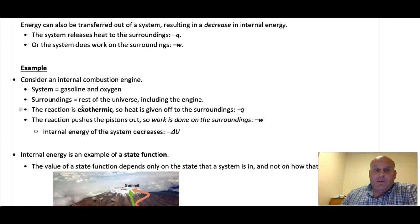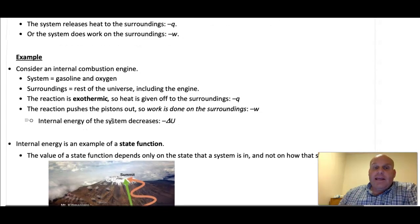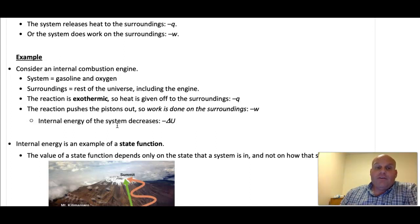So here's an example of what we're talking about here, a qualitative example, an internal combustion engine. So the system is gasoline and oxygen. The surroundings is the rest of the universe, including the engine. So this reaction that's happening is the system, this combustion reaction that's happening with the gasoline and the oxygen. So the reaction is exothermic, it's giving off heat to the surroundings, and the reaction pushes the piston, so it's doing work on the surroundings, so a negative work value there. So the internal energy of the system decreases because it's losing heat to the surroundings and it's doing work on the surroundings.